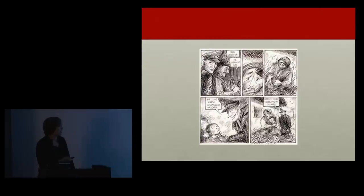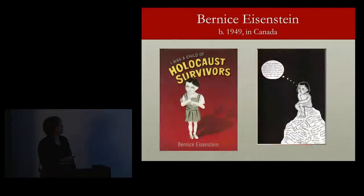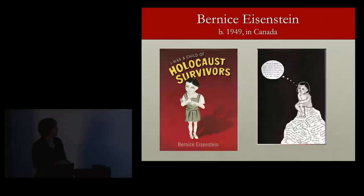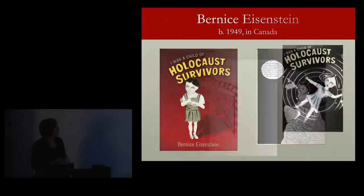She brought out a second work called Letting It Go that also had really good reviews — a different kind of style. This is a Canadian illustrator who illustrates books and decided to illustrate her own memoir about being the child of Holocaust survivors, called I Was a Child of Holocaust Survivors. It has very interesting graphic work with a lot of text and some really interesting pictures. If you do a graphic piece, you'll see there are a lot of different aesthetic choices: maybe you want a lot of text and stick figures, or very elaborate drawings with one or two words. You have to decide on the balance and flow.